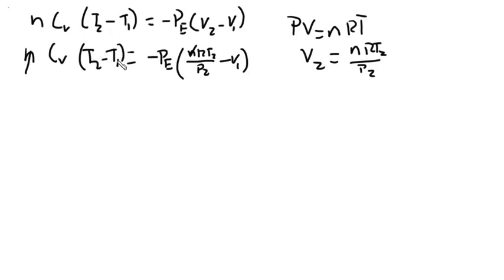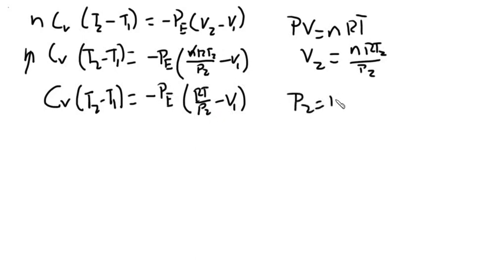We know Cv is 5 over 2 R. We know the initial temperature, we know pressure, we know R, we know the initial volume, and we know the final pressure. So, P_2, because this system is going to mechanical equilibrium, which means the inside pressure at equilibrium is the same as the external pressure. So, P_2 is equal to P_E, which is equal to 1 bar.